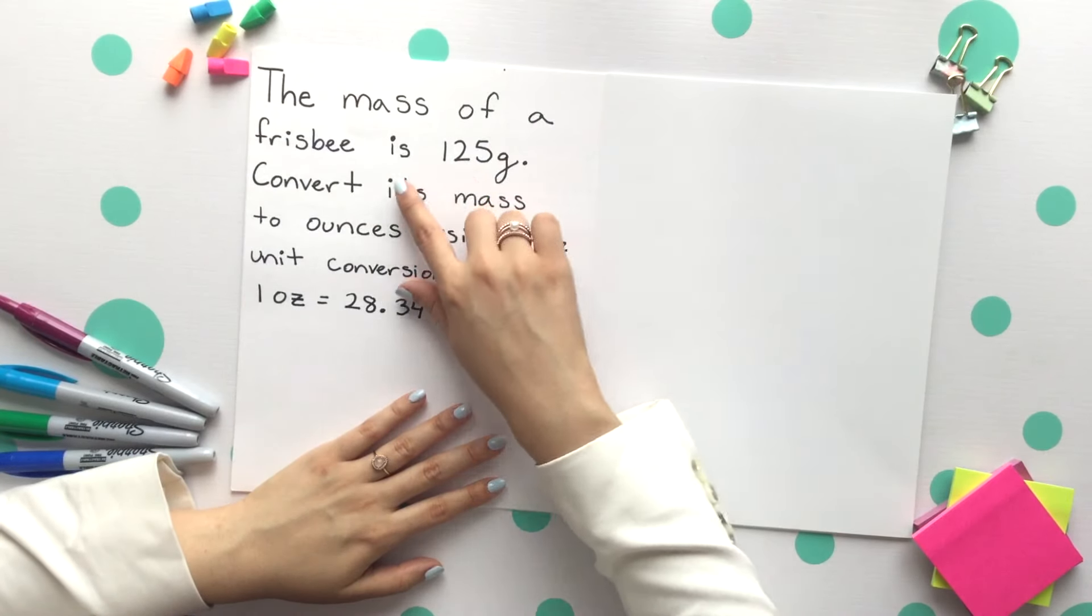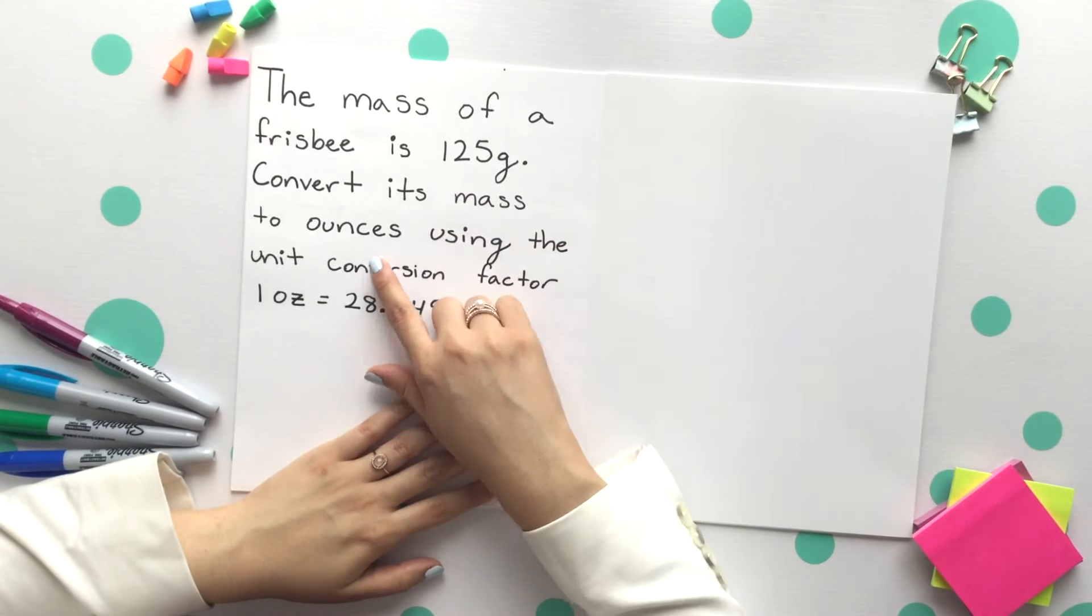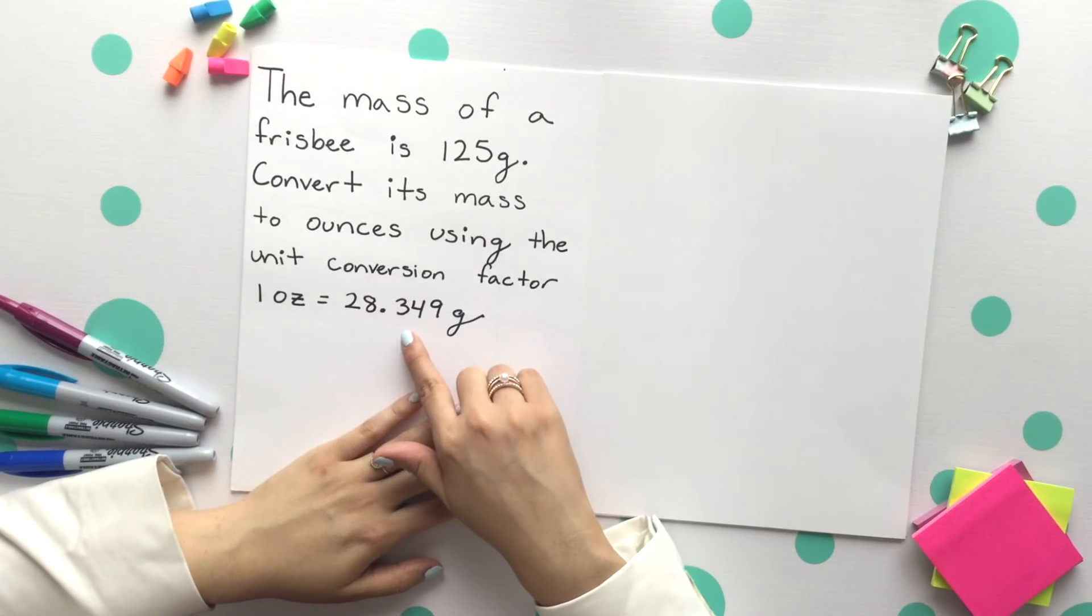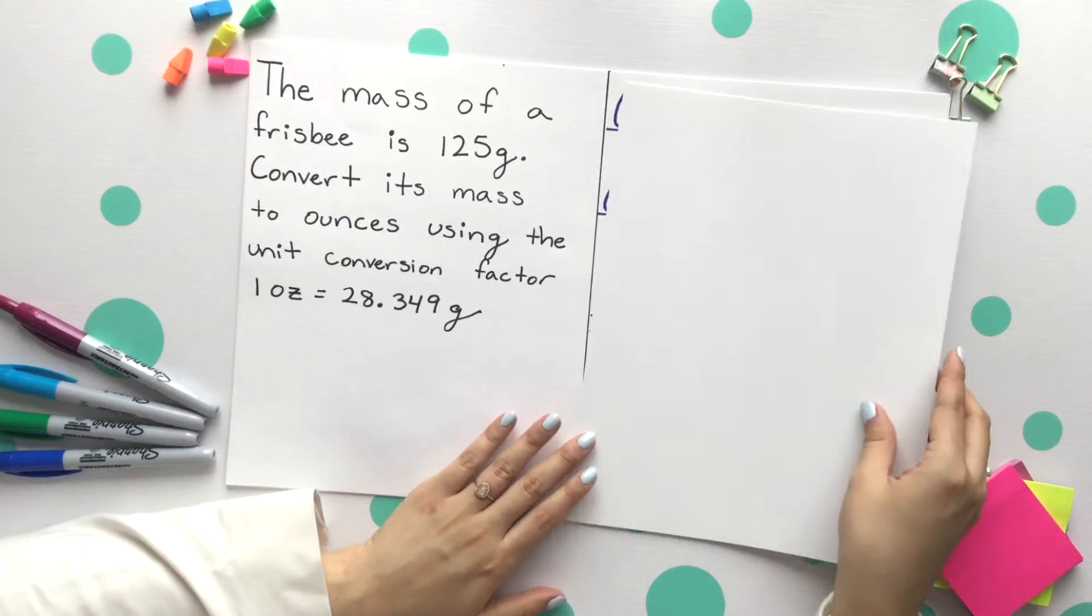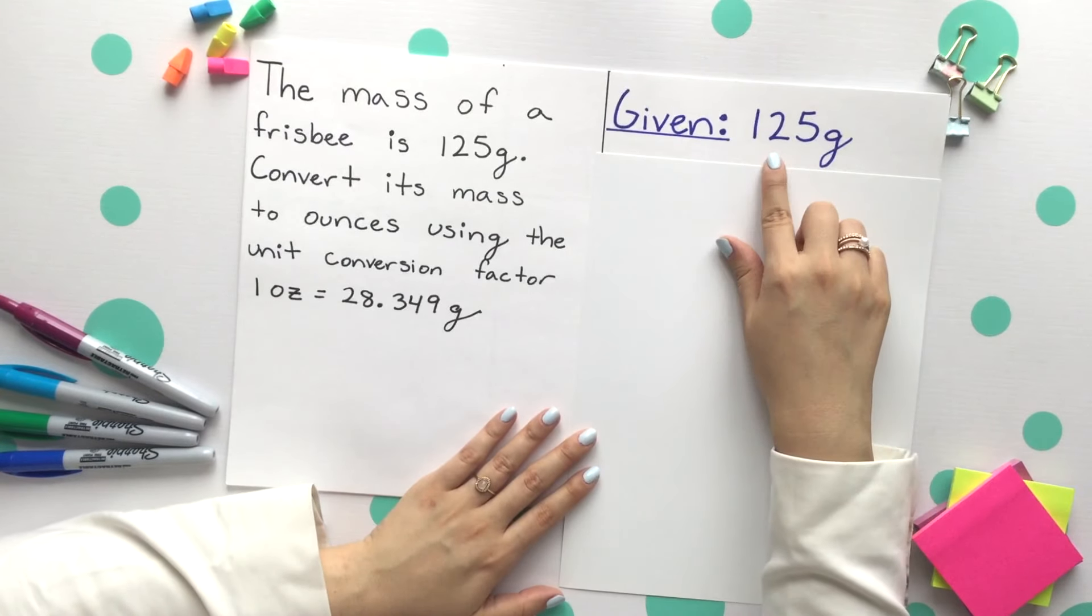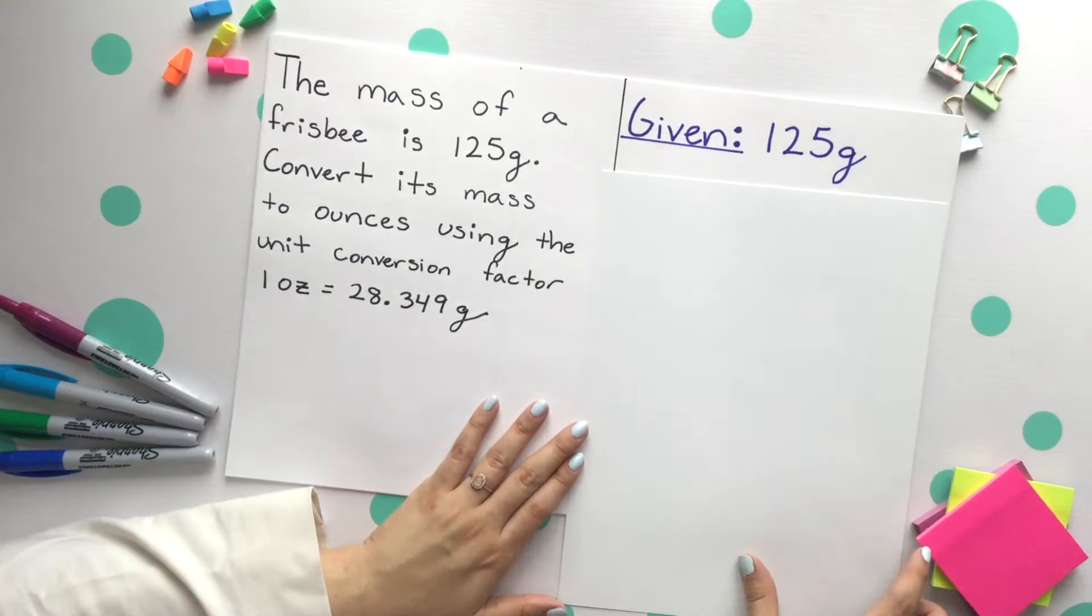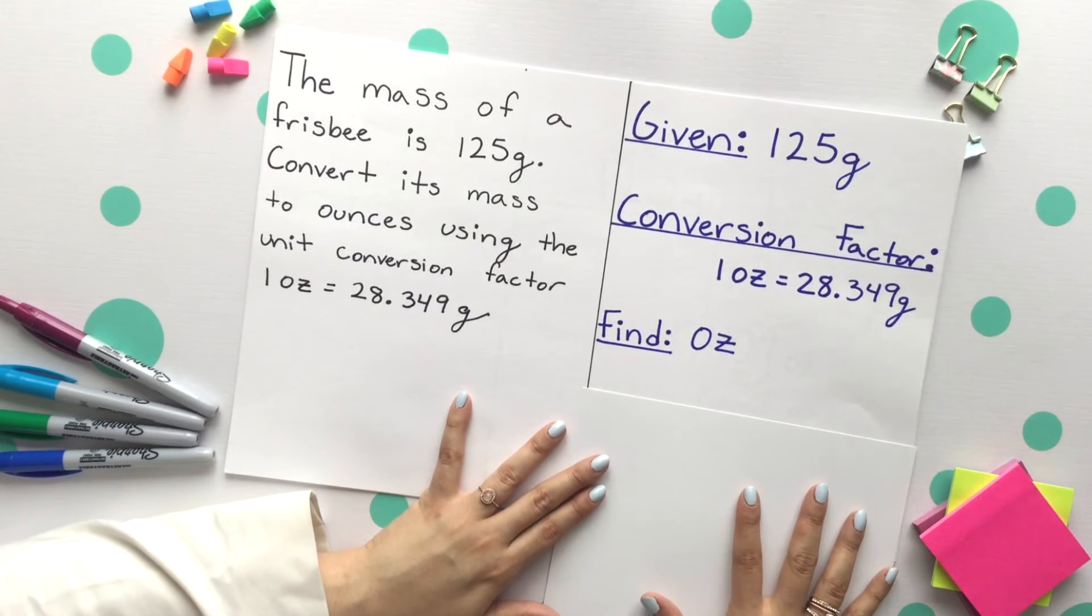The mass of a Frisbee is 125 grams. Convert its mass to ounces using the conversion factor one ounce equals 28.349 grams. Your given is the 125 grams. This one is so nice to actually give you the conversion factor of one ounce is equal to this amount of grams, and we are finding our ounces.